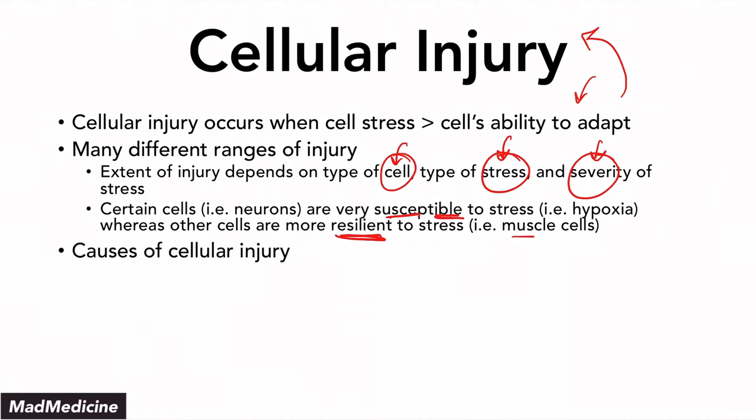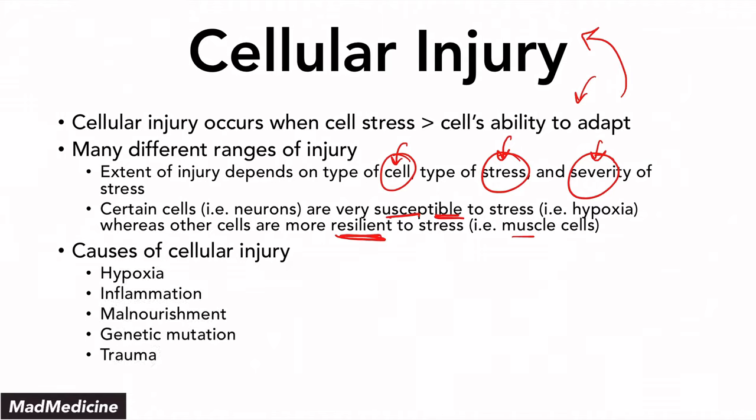Cellular injury can happen due to hypoxia, inflammation, malnourishment, genetic mutation, and trauma. We've discussed cellular injury and hypoxia in previous lectures — you can go check them out. But hypoxia is very important to remember in the context of cellular damage because you have to understand what is causing it. A lot of things can cause cellular damage, and one of those things is definitely hypoxia.